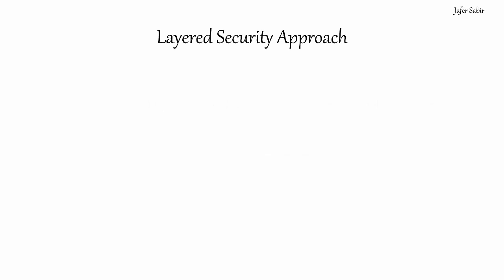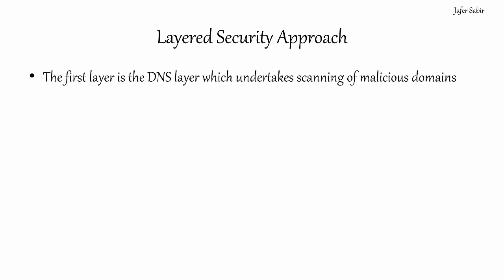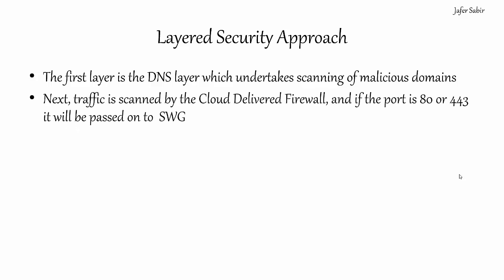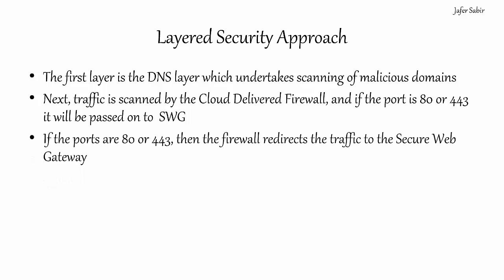Like with any security, this is a layered security approach. First, the DNS layer is checked for domains associated with malware. Then the cloud delivered firewall checks for IP, port, protocol, and application-based security rules. If the packet is on port 80 or 443, when the firewall inspects it, the connection is passed on to the Secure Web Gateway, which checks the web traffic for malicious threats and undertakes any configured policy enforcement.